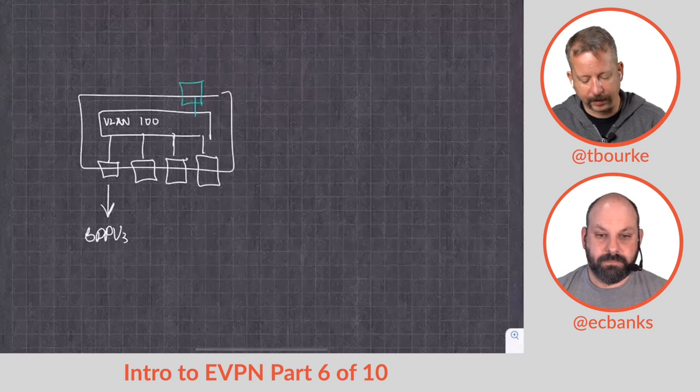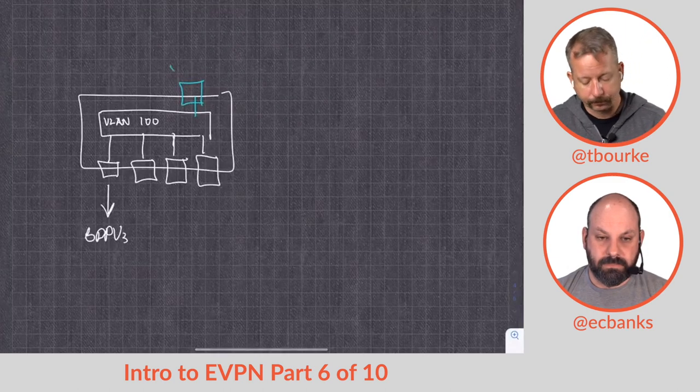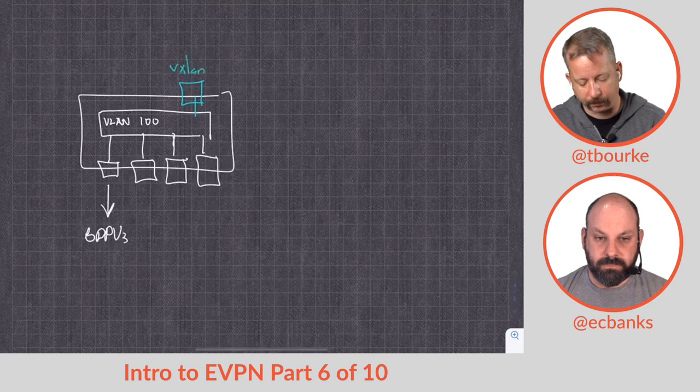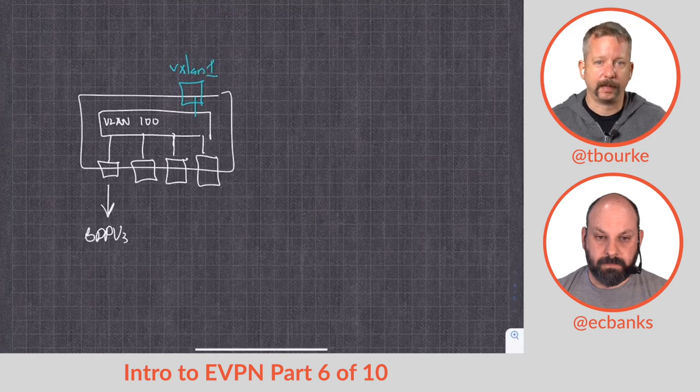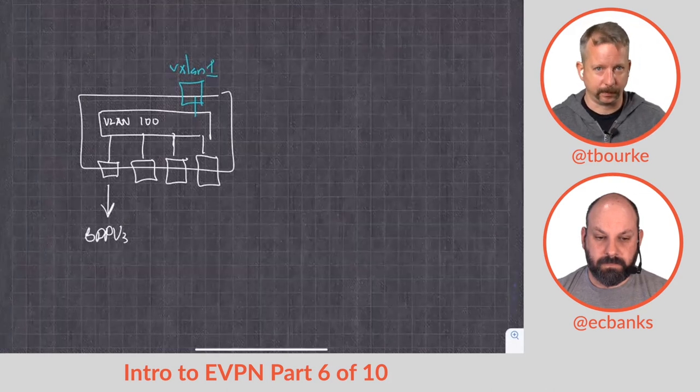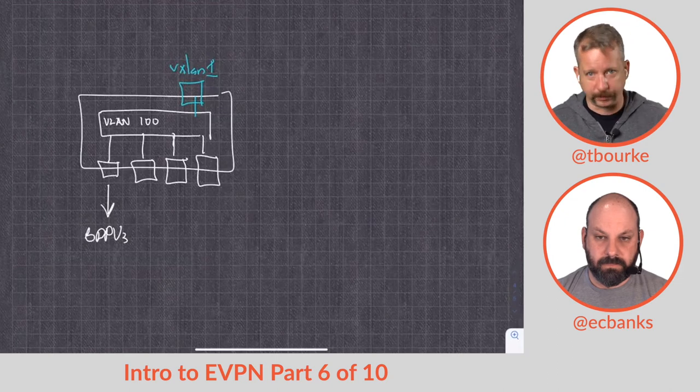And that's going to be our VXLAN tunnel interface. If you do 'show mac address table,' sometimes you might see that the MAC address can be reached by VXLAN 1—that means it's going to go across the tunnel.